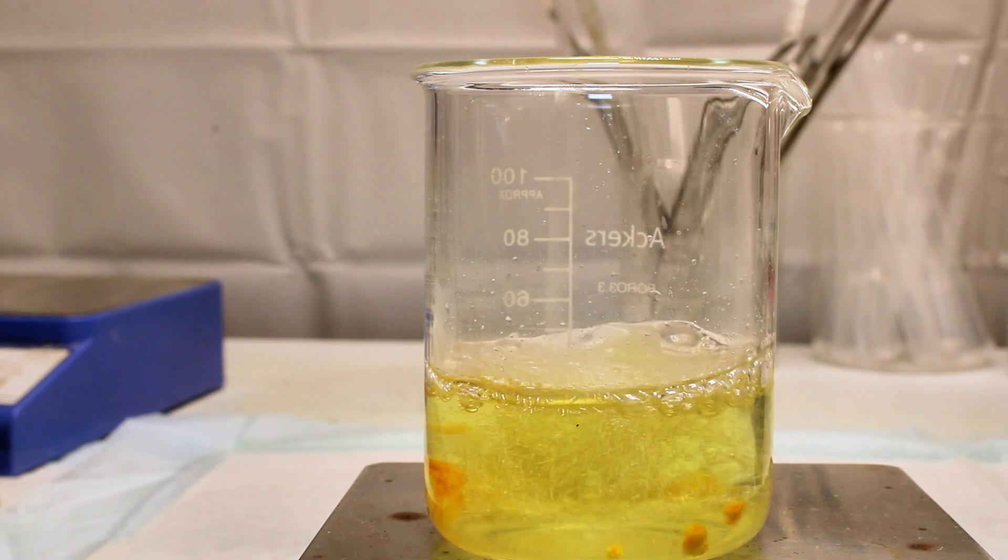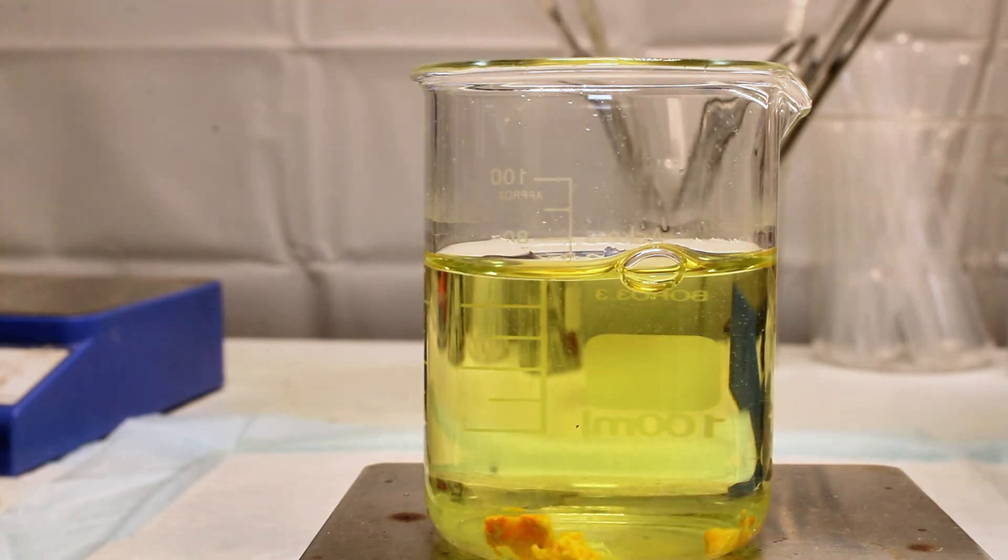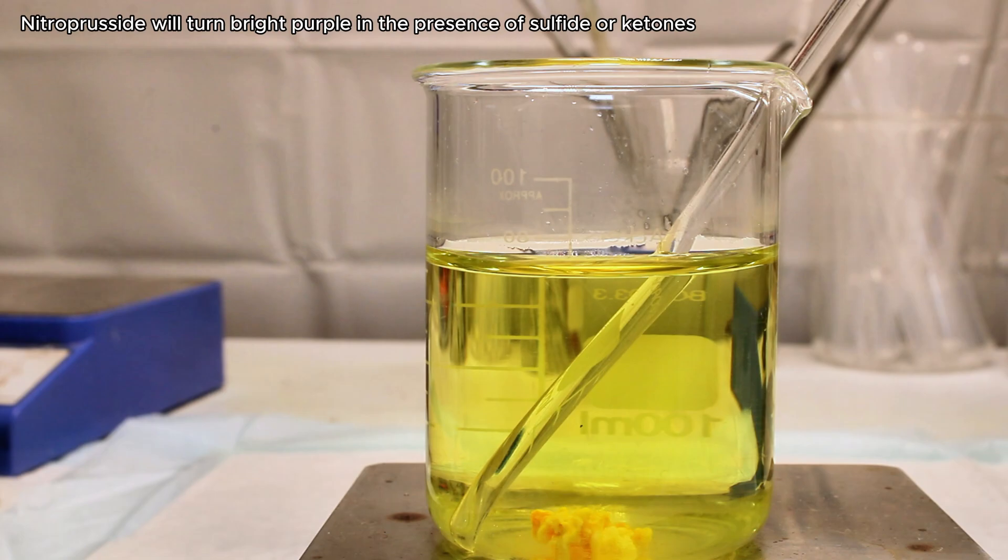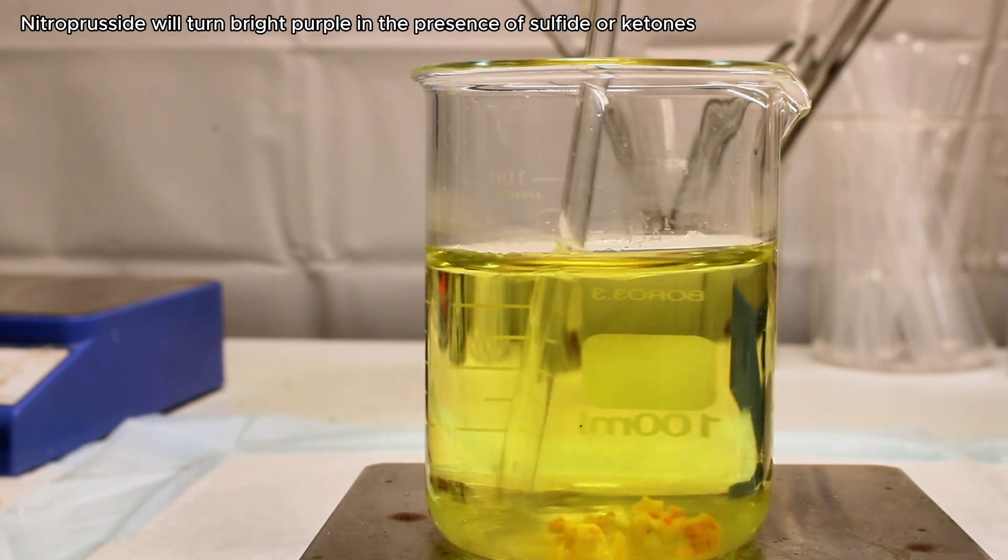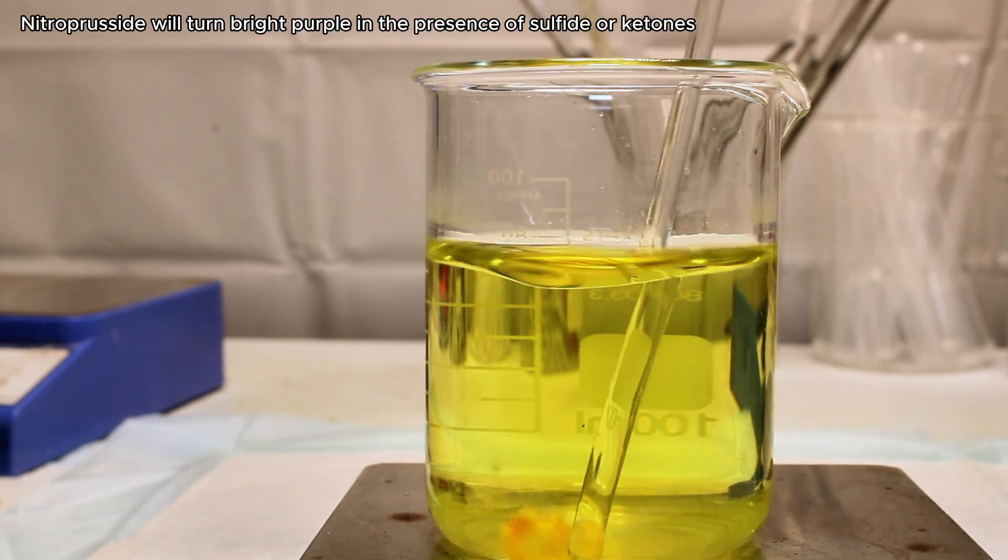One more use of sodium nitroprusside I didn't mention earlier is that it can be used to detect the presence of sulfide ions or ketones. In both cases, it turns purple, and for my first demo, I simply dissolved some of the sodium sulfide I made a few months ago in some distilled water.